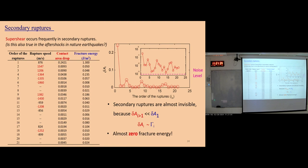The contact area drop tells us how many asperities break during a rupture. There is also the same way to evaluate the fracture energy. It gives us an estimation of fracture energy, and we find that the fracture energies of these secondary ruptures are close to zero — of course not real zero, but really close.